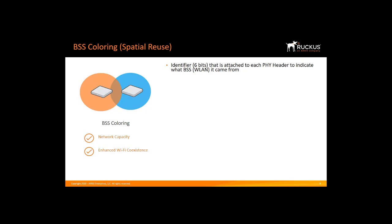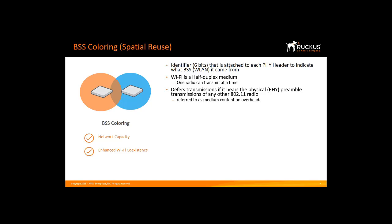Another 11ax feature is the addition of color. 11ax supports a feature called Basic Service Set, or BSS Color, which is a 6-bit identifier attached to each PHY header to indicate what wireless LAN it came from. Since Wi-Fi is a half-duplex medium, meaning that only one radio can transmit on a channel at any given time, an 802.11 radio will defer transmission if it hears the PHY preamble of any 802.11 radio at a signal detect threshold of 4 decibels or greater. This is referred to as medium contention overhead, also commonly referred to as overlapping Basic Service Set, or OBSS, also known as Co-Channel Interference, or CCI.